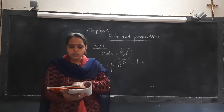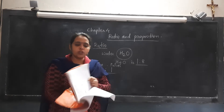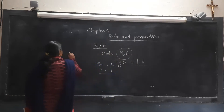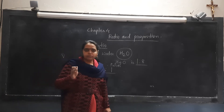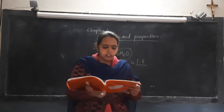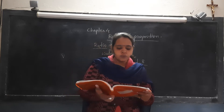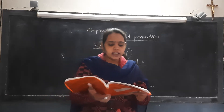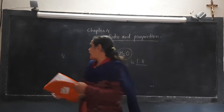Now we are going to see the properties of ratio, but before that, direct proportion and inverse proportion. Direct proportion means if one quantity is increasing, another quantity also increases. For example, petrol in litres and distance in kilometres - if one litre of petrol covers 10 kilometres, then 2 litres covers 20 kilometres, and so on. The ratio is 1 is to 10. As petrol increases, distance also increases. This is called direct proportion.